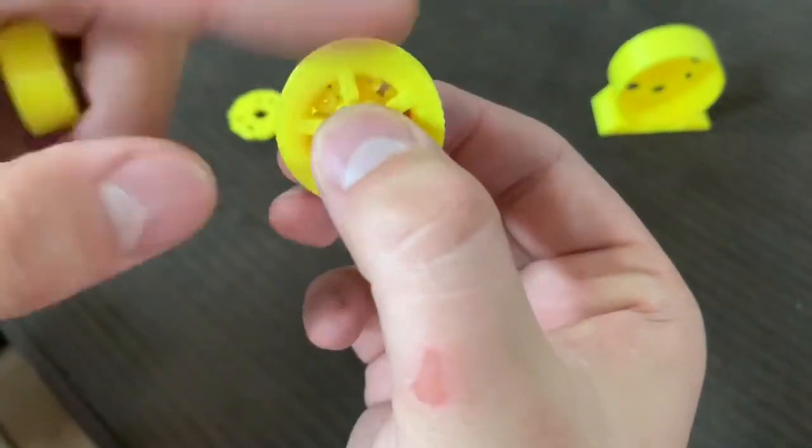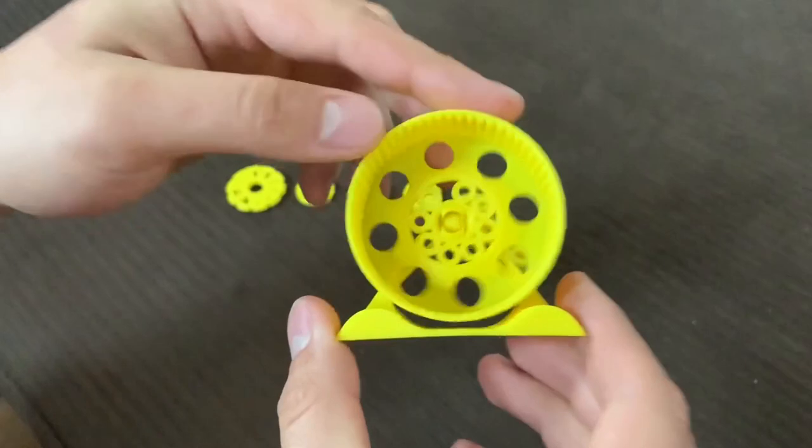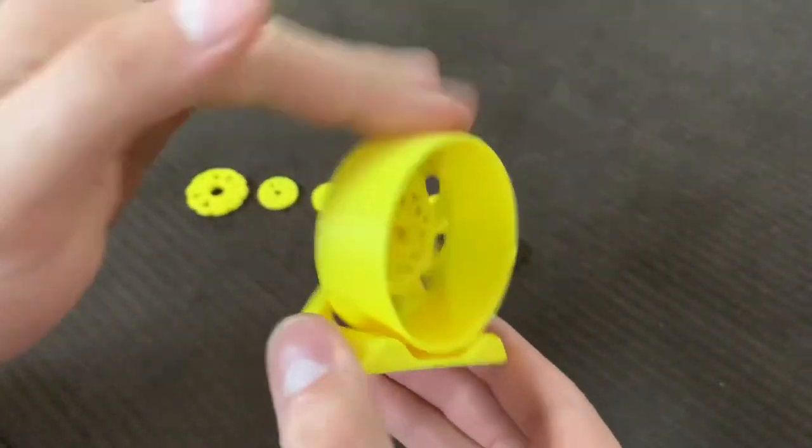And this is just again another side project I had. It's a spinning hamster wheel. So if anybody has a hamster, go ahead, it's fully printable. And this is a 35% scale, so the original one is actually a lot bigger.